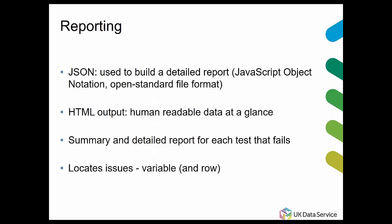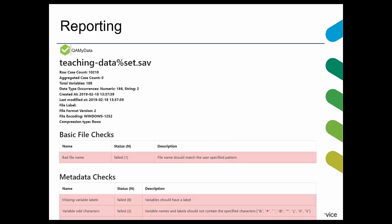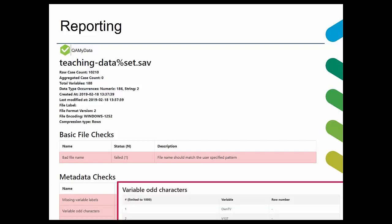We have reporting in JSON, which is used to build a very detailed report, and then we have a very straightforward HTML report that we can read at a glance — it tells you which tests have failed and which have passed. For the ones that have failed, you click on the row and find out where the problem is. It's supposed to be very straightforward. Here's an example of the report generated: it's given me some summary things, found some bad file names, and when I click on the row, it tells me which variables are guilty — this is the odd characters in variables.